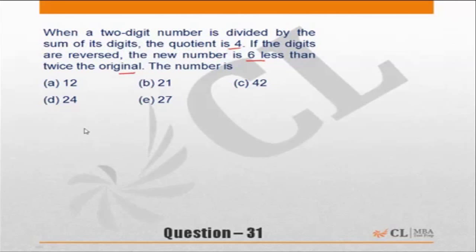We will assume let the number be 10A plus B. When a two-digit number is divided by sum of its digits, divided by A plus B, we will say the quotient is equal to 4. Or the quotient is equal to 4.